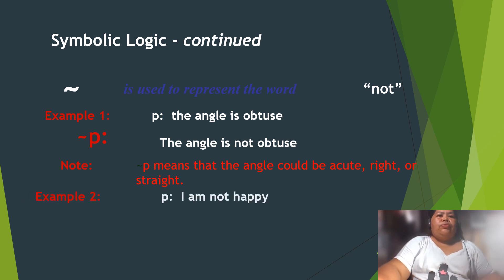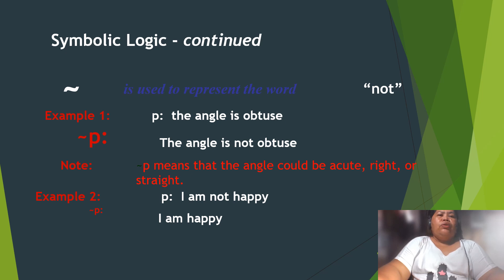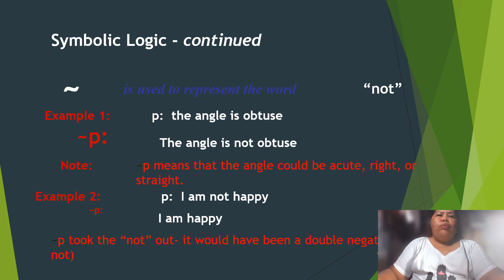Example two: P is 'I am not happy.' So not-P — taking the not out — would result in a double negative: not-not, meaning 'I am happy.'